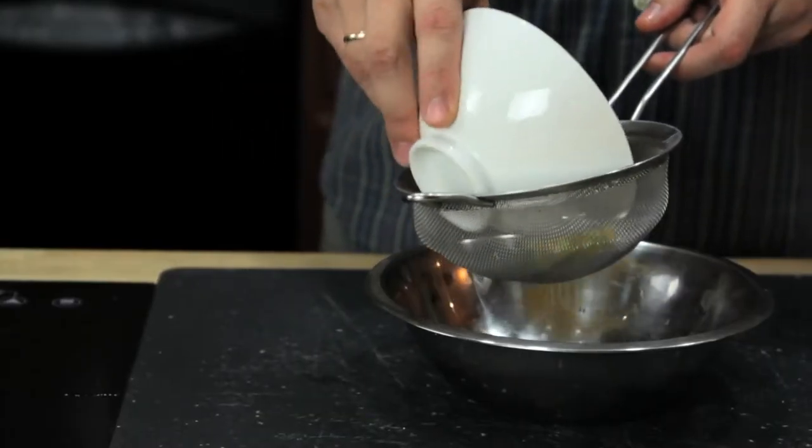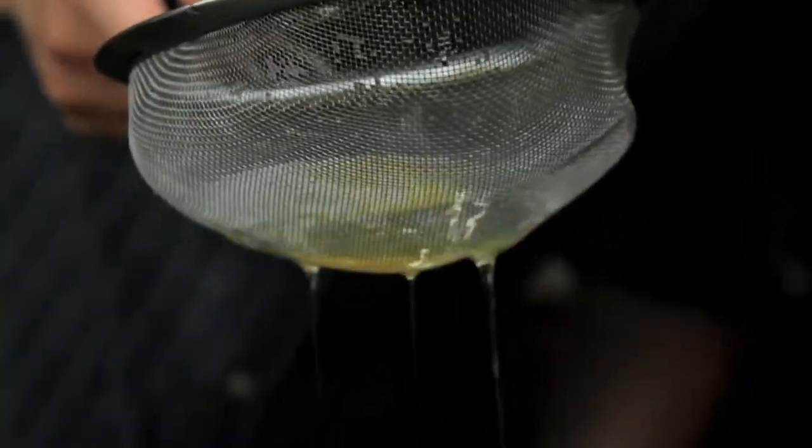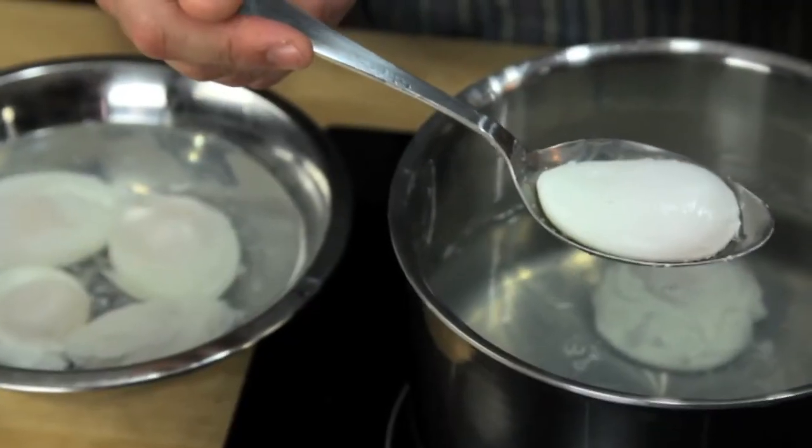You know, those really ugly ones with the wispy white floaters that completely ruin your brunch. To get rid of them, we're going to transfer our eggs to a fine mesh strainer and gently swirl it around until all the excess white is drained away. What you're left with is a nice, tight egg. Even better is that the strainer is actually the ideal tool for lowering the egg into the water.